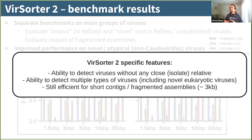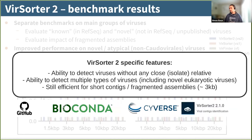In conclusion regarding VSorder2's specific features: we really focus on detecting viruses without close relatives, the ability to detect multiple types of viruses, and being efficient even on shorter contigs — VSorder2 performs well all the way down to 3 kb. If this sounds useful, VSorder2 is available on GitHub as a Bioconda package and on Cyverse, thanks to Jiarong, so there are plenty of ways to go try it out.